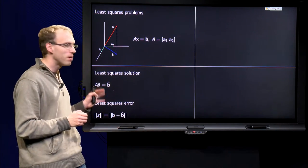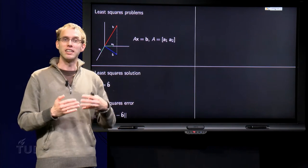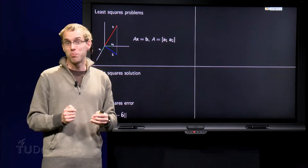And since that is what is minimized, that is what we call the least squares error. That tells us how bad our approximation is.